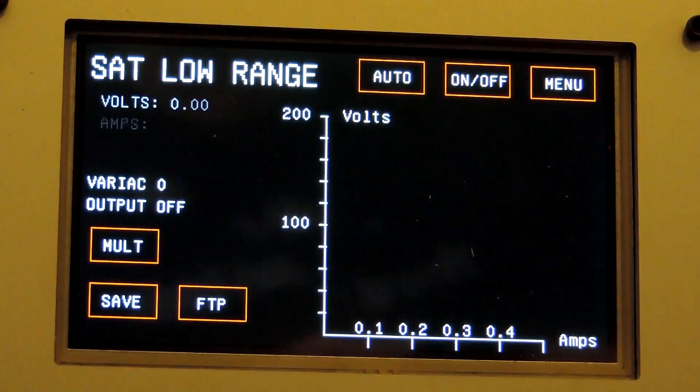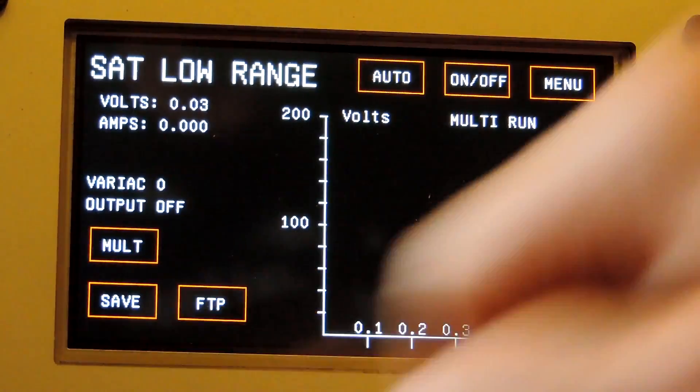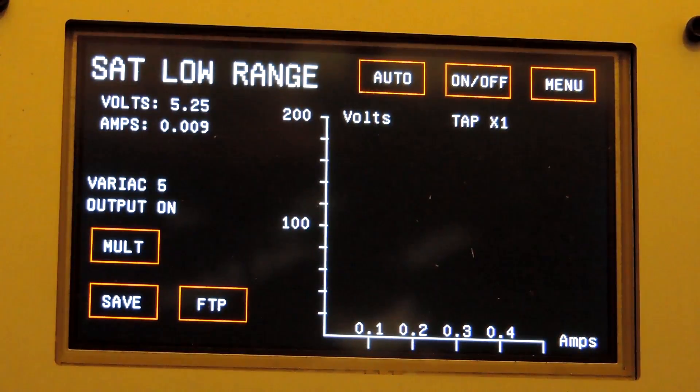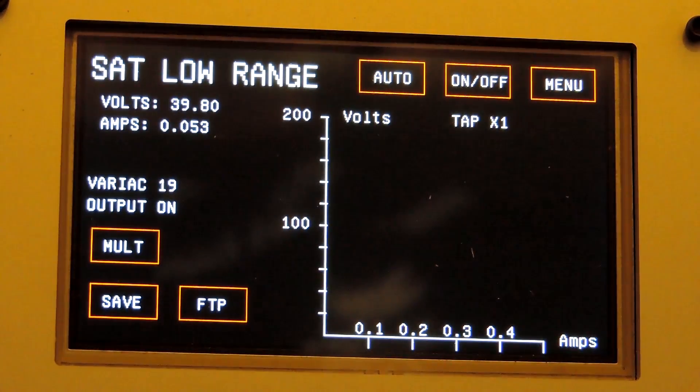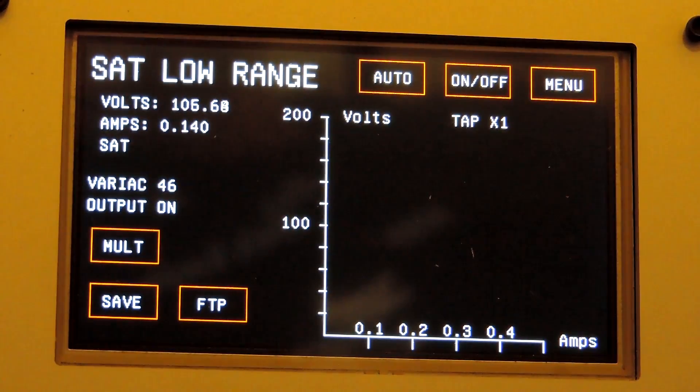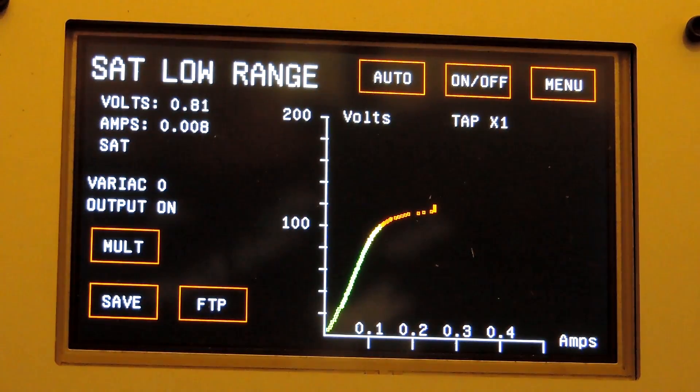And multi. It is now running the test on tap X1. The LED is red because the red jack is connected. When it reaches the saturation point, under the word amps, the word sat will appear. The test for that tap is complete. It is running the variac down and plotting the graph.